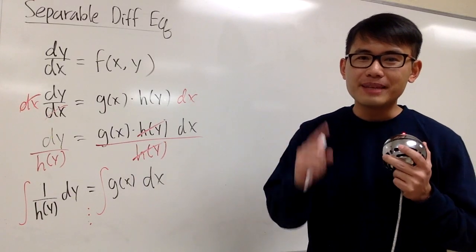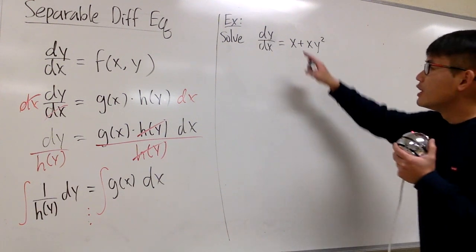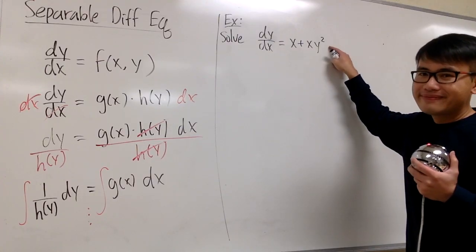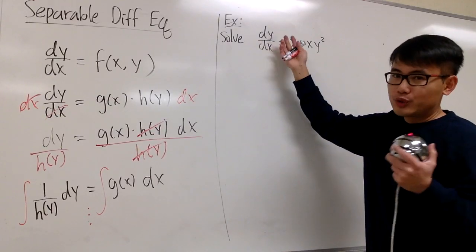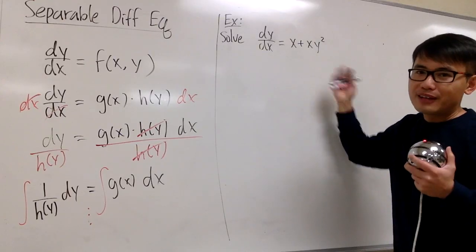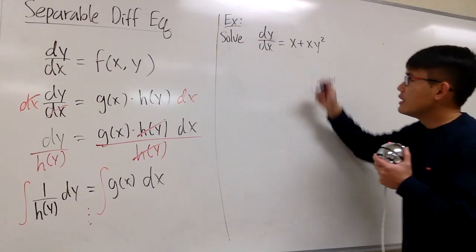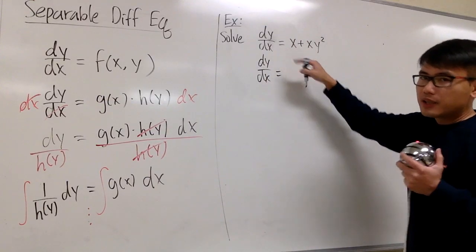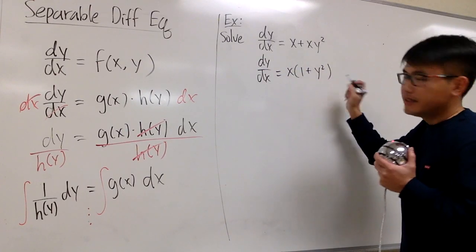Now let's take a look at an example. We have dy/dx equal to x plus x times y squared. As I mentioned earlier, the strategy is to have dy/dx on one side, which we do. Now let's focus on the right-hand side — can we factor things out? Yes! We can factor the x, because both terms have the x. So dy/dx equals x times the quantity 1 plus y squared.